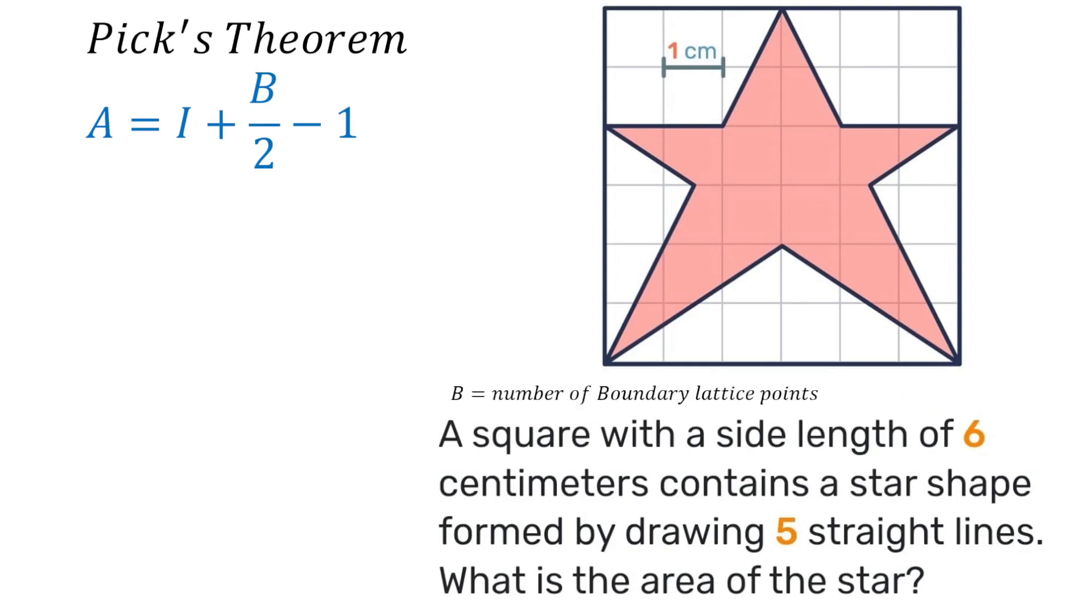B is the number of boundary lattice points which means those are the grid lines that intersect right on the outline of the star.